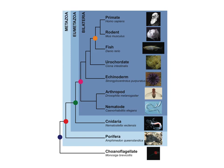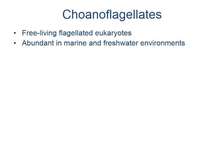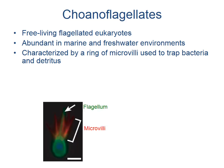One of the most pressing questions in biology is how did animal multicellularity evolve. To search for answers, we take a look at a group of organisms that represent the closest unicellular relative of multicellular animals: the choanoflagellates. Choanoflagellates are free-living flagellated eukaryotes that are abundant in marine and freshwater environments.